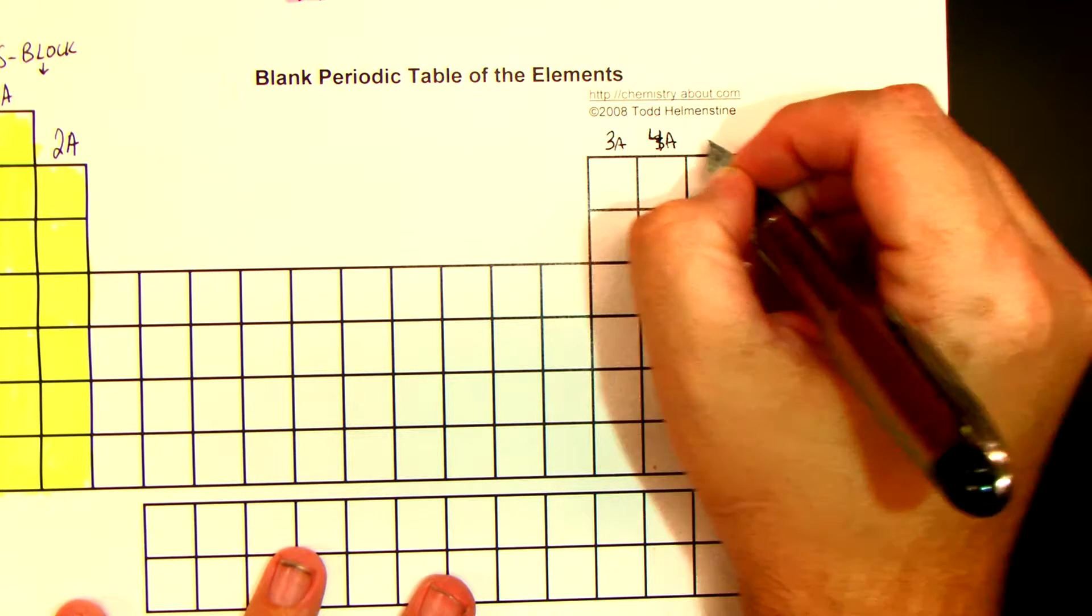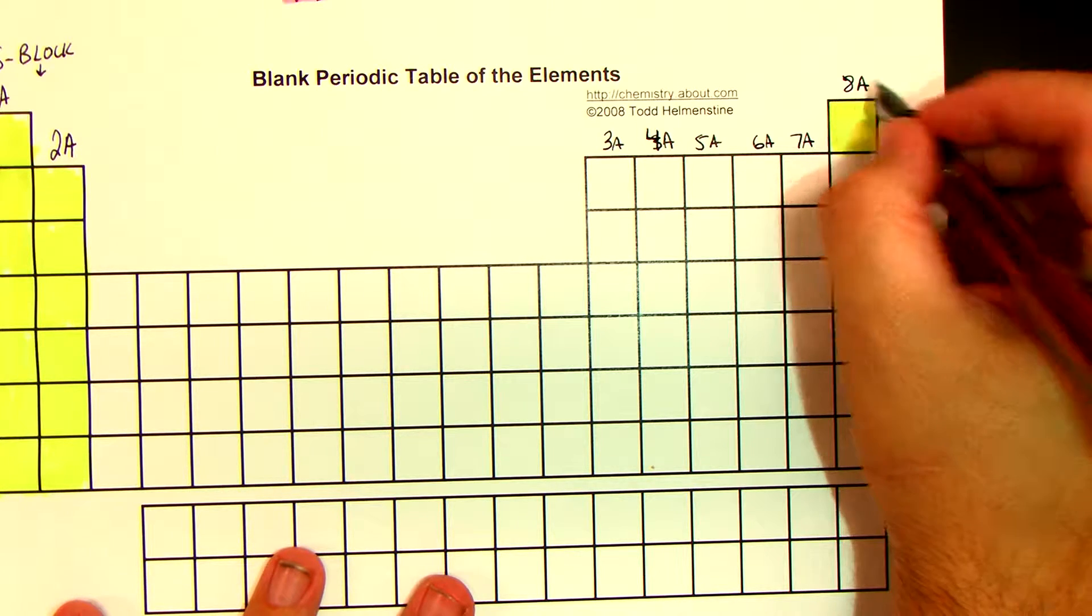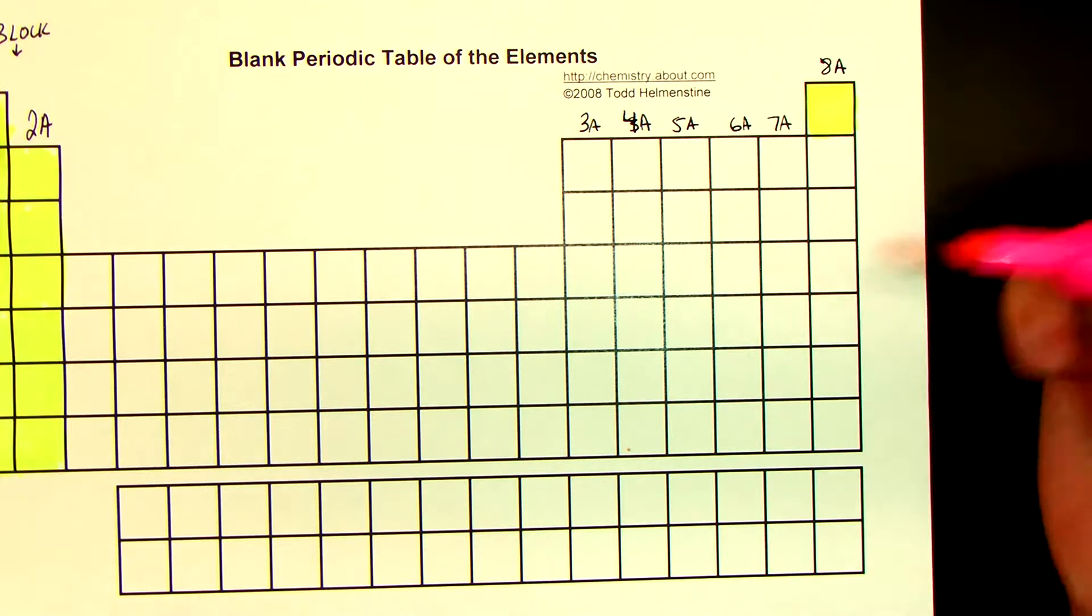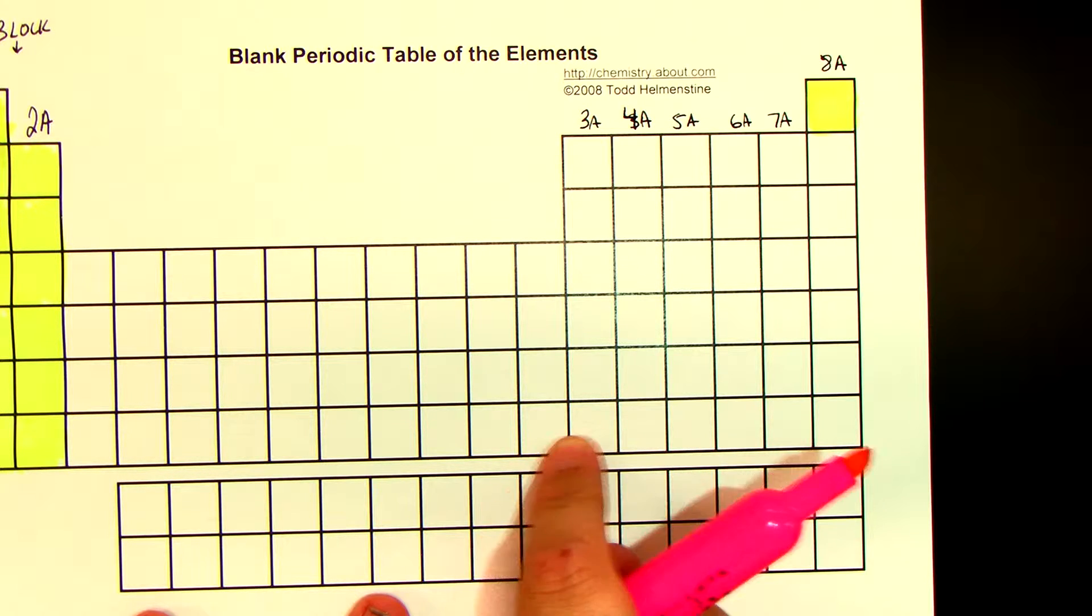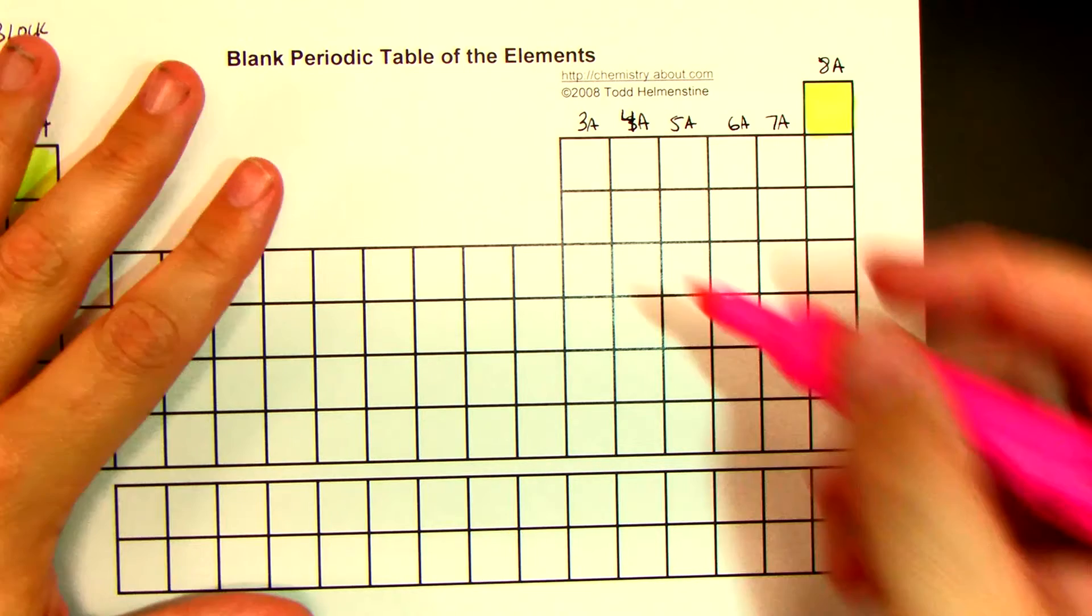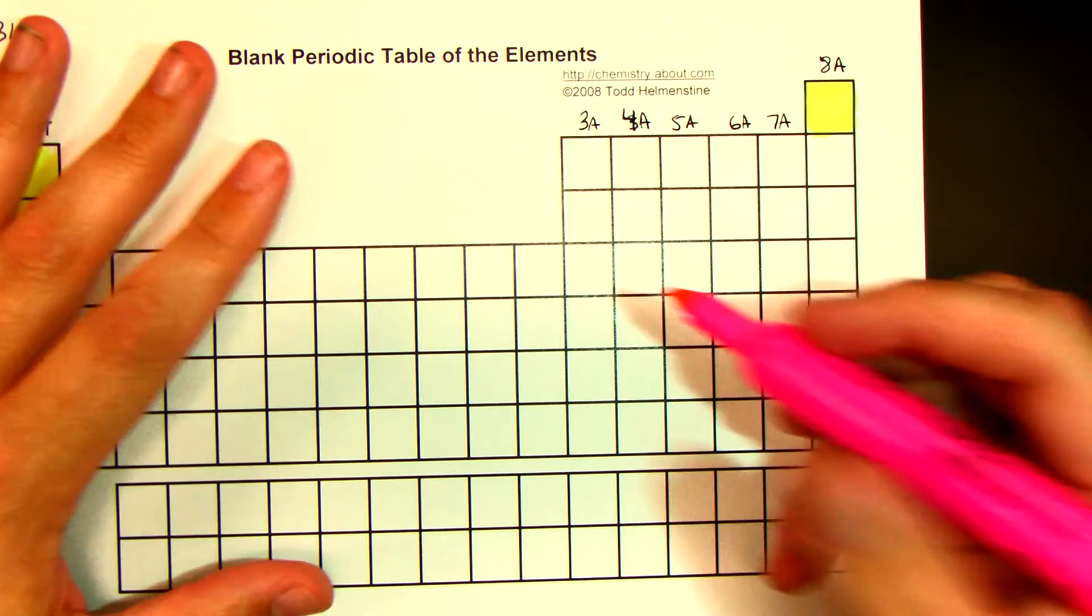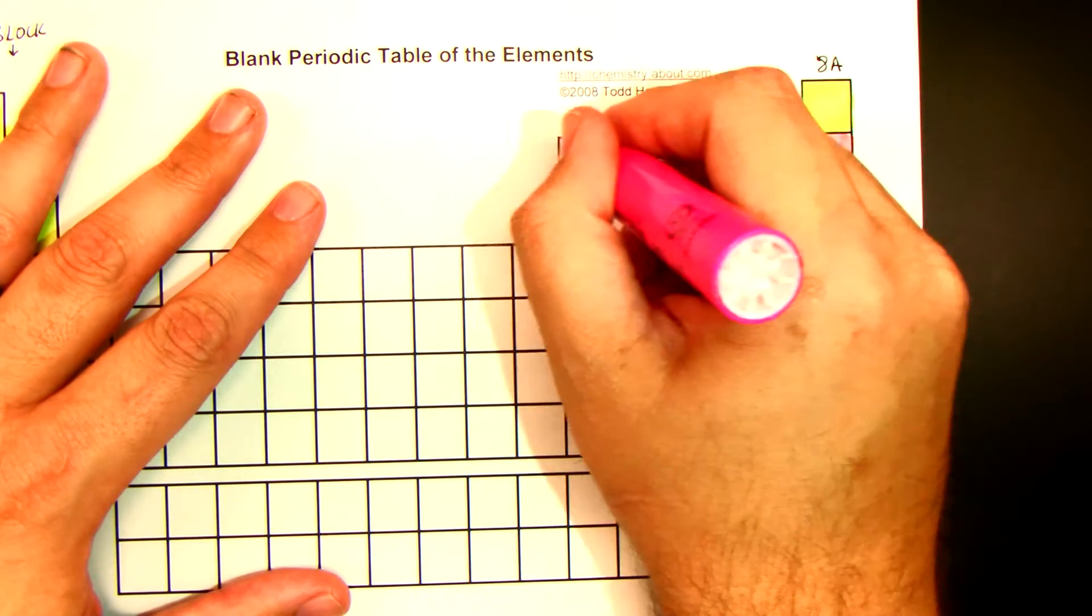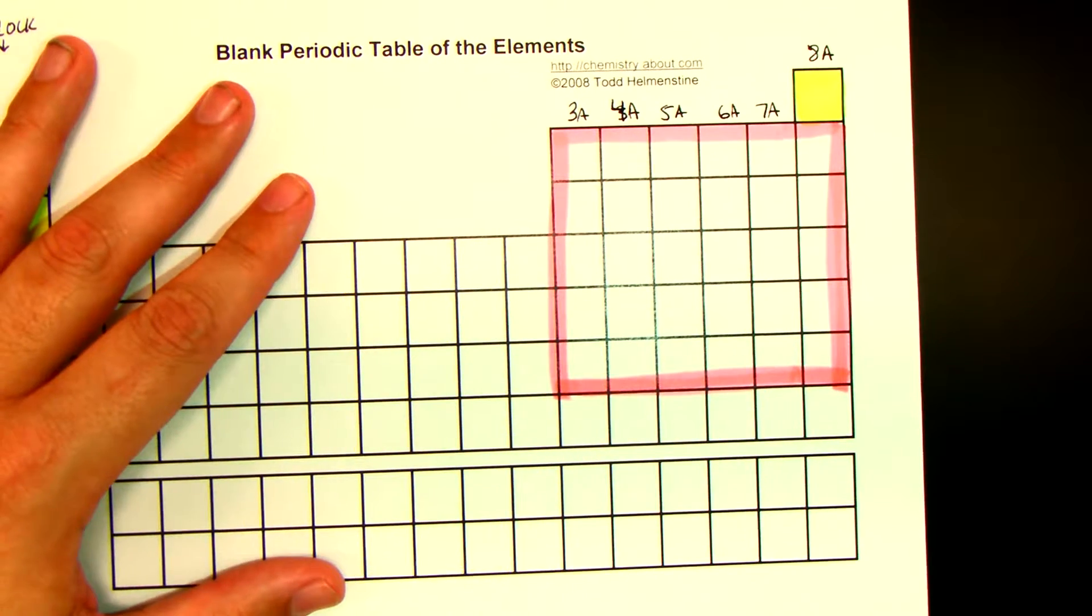That's 4A, 5A, 6A, 7A. And then, over here is 8A. So those are all the A's. Now, down here, the last row is basically your unknowns. Those are the elements that we are just learning about that are being discovered in laboratories, things like that, that don't stick around for that long, that we're just giving names to, all that kind of fun stuff. So they're not part of the P block. The P block is basically everything here. And it just doesn't do that last row. So it's a nice little block here, and then you can just kind of color that in.